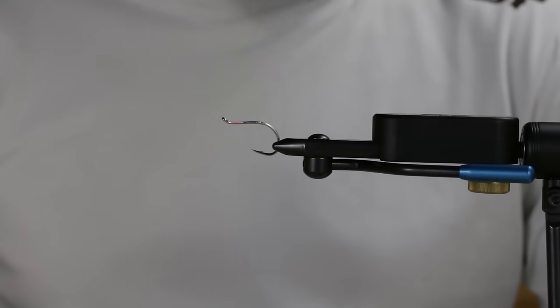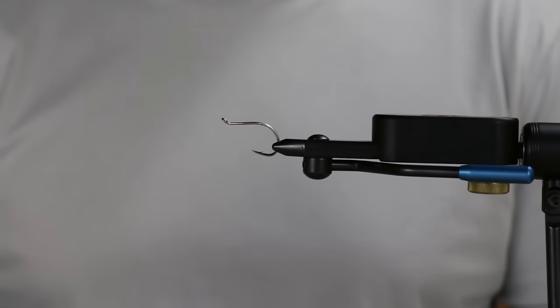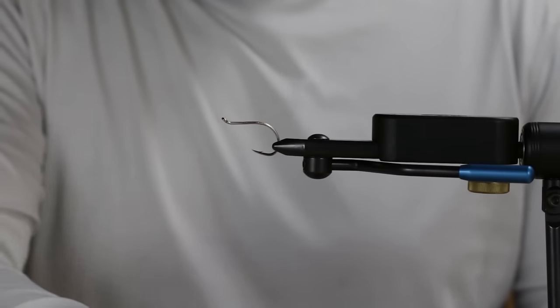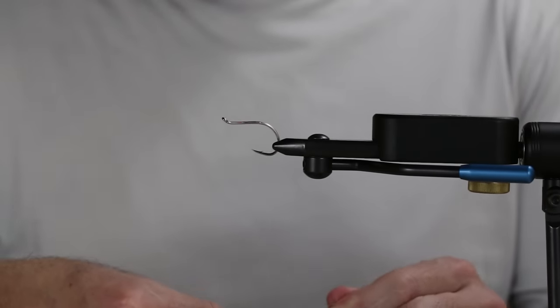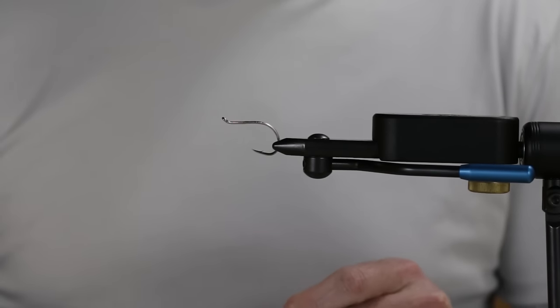Today we're going to be tying a baitfish pattern. This is one of my favorites, it's a saltwater pattern, and the techniques I'm going to show you go pretty good with pretty much any baitfish or minnow pattern. This works really good, so we're going to be doing some saltwater fishing here in the next little bit, so I thought we'd start with kind of a traditional baitfish pattern.